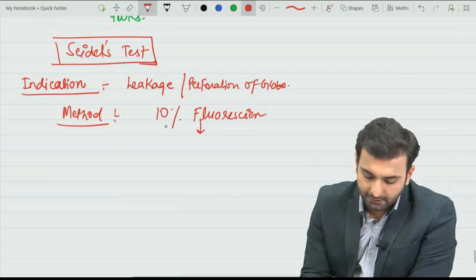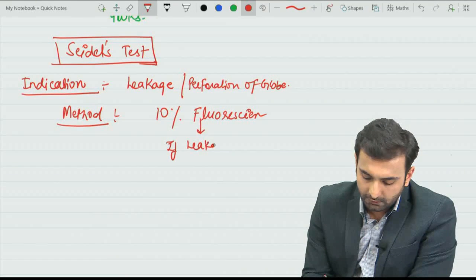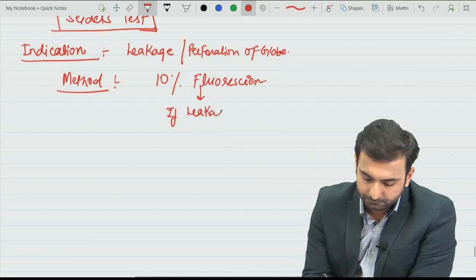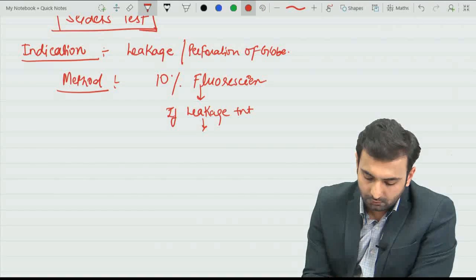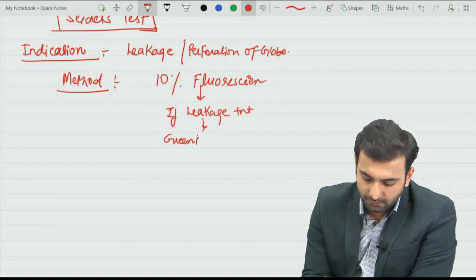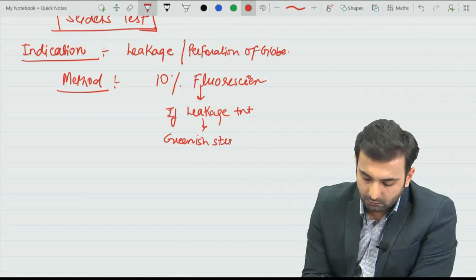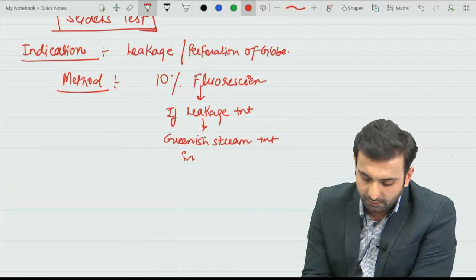If leakage is present, what will happen? There is a greenish stream present in the orange color dye.